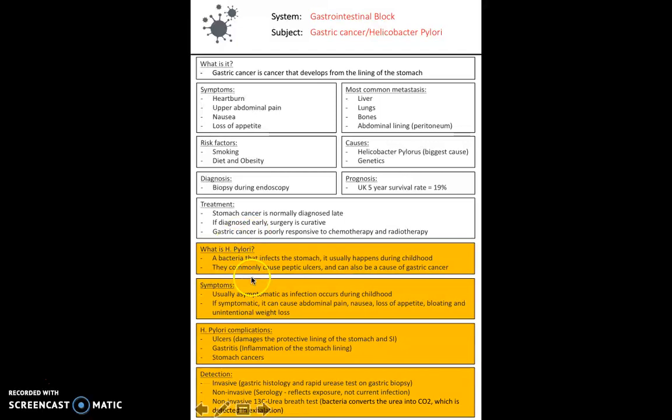H. pylori is the biggest cause of gastric cancer. It's a bacteria that infects the stomach, usually during childhood, and can live there causing no symptoms whatsoever. However, if there is a trigger which causes it to become symptomatic, it can cause abdominal pain, nausea, loss of appetite, bloating, and unintentional weight loss. Complications of H. pylori include peptic ulcers, gastritis — inflammation of the lining of the stomach — and gastric cancer.